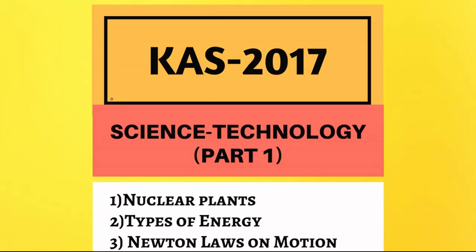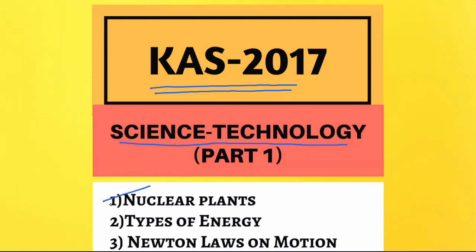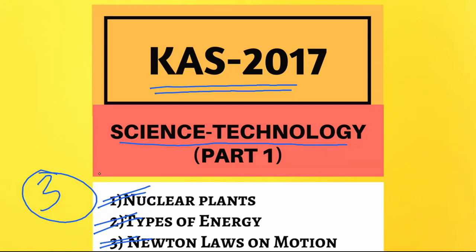Hello everyone, welcome to Karnataka exams. This is part 1 of science and technology of the KS series. We'll do some parts of science and technology. In this first part, we'll see three topics: nuclear plants in India, types of sources, what is nuclear fission, what is nuclear fusion, from where we get fuels, types of energy, and Newton's laws of motion.